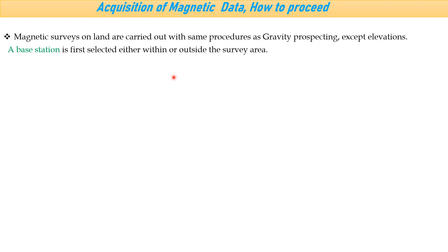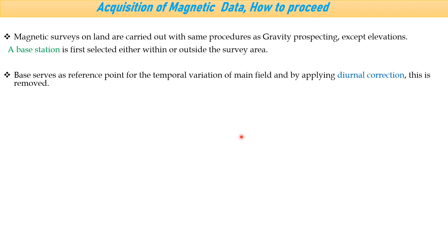Land surveys require selecting a base station. Just as in gravity, where we know the absolute value of gravity at the base station and derive values for other stations from it, we establish a base station in magnetic surveying too. It serves as a reference point for the temporal variation of the main field — the external field — and we apply the diurnal correction, which can be removed from the main data.